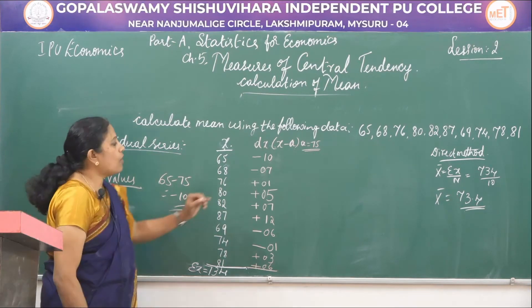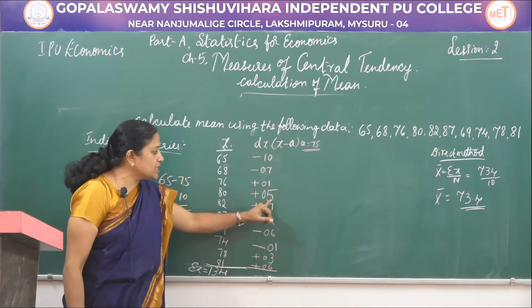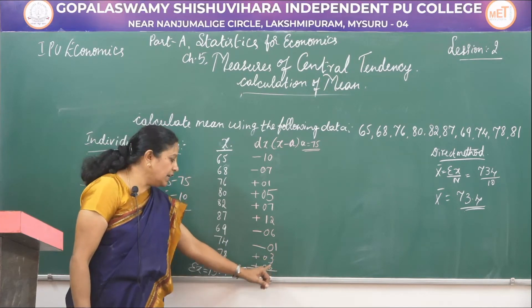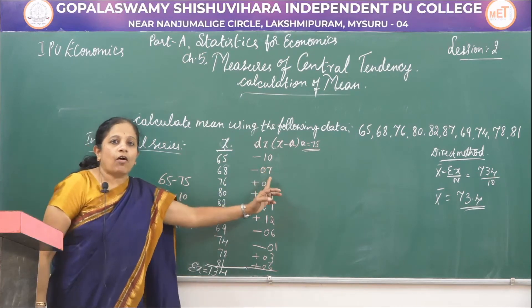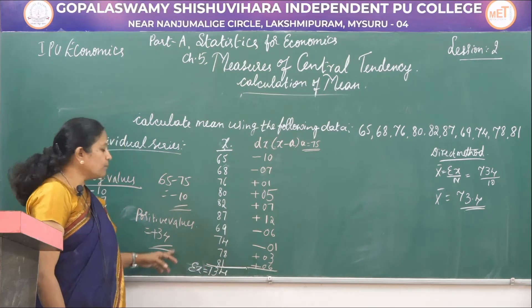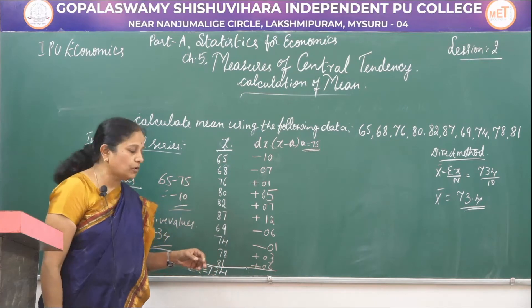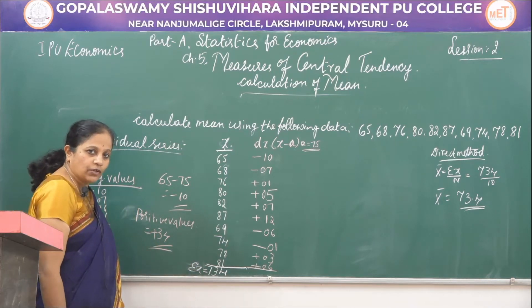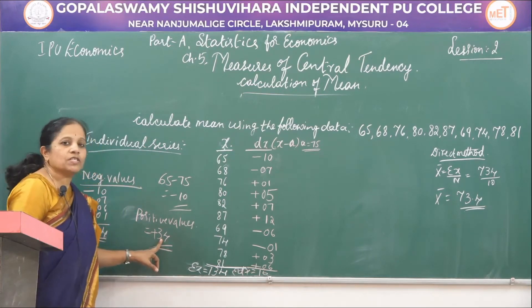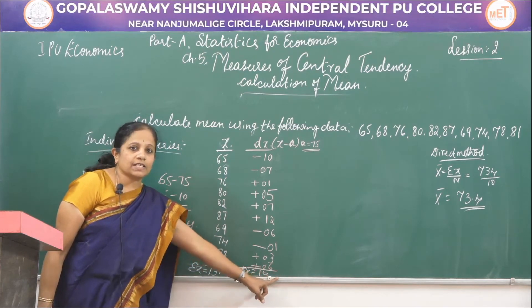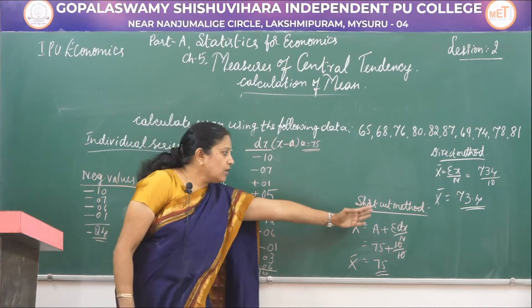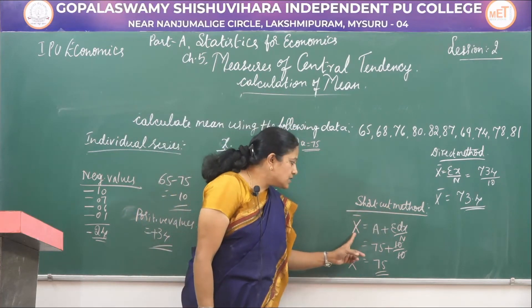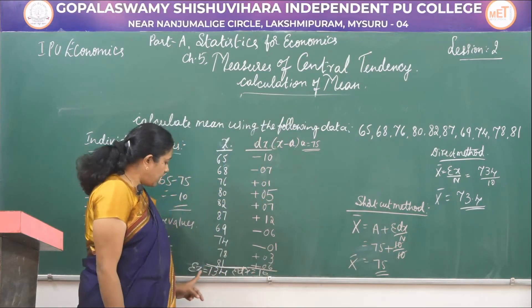Now let us see the total of all the positive values: 1 plus 5 is 6, 6 plus 7 is 13, 13 plus 12 is 25, 25 plus 3 is 28, 28 plus 6 is 34. So the total of all positive values is plus 34. 34 minus 24 is 10. The positive number is higher than the negative values total, so the difference between the positive and negative values is 10. Sigma dx is 10. Now let us calculate the mean for individual series using the shortcut method. The formula is x-bar equals a plus sigma dx divided by n.